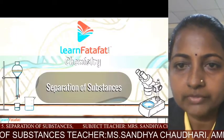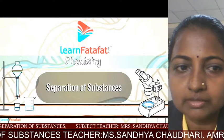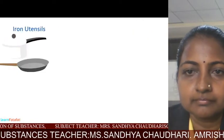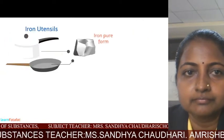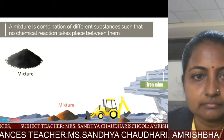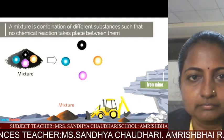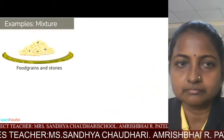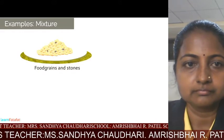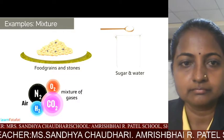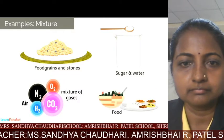Now we shall watch a video on separation of substances. The materials that we get are not always in pure form — substances occur in the form of a mixture. A mixture is a combination of different substances such that no chemical reaction takes place between them. Examples include a mixture of food grains and stones, a mixture of sugar and water, air which is a mixture of different gases, and even the food that you eat is also a mixture.